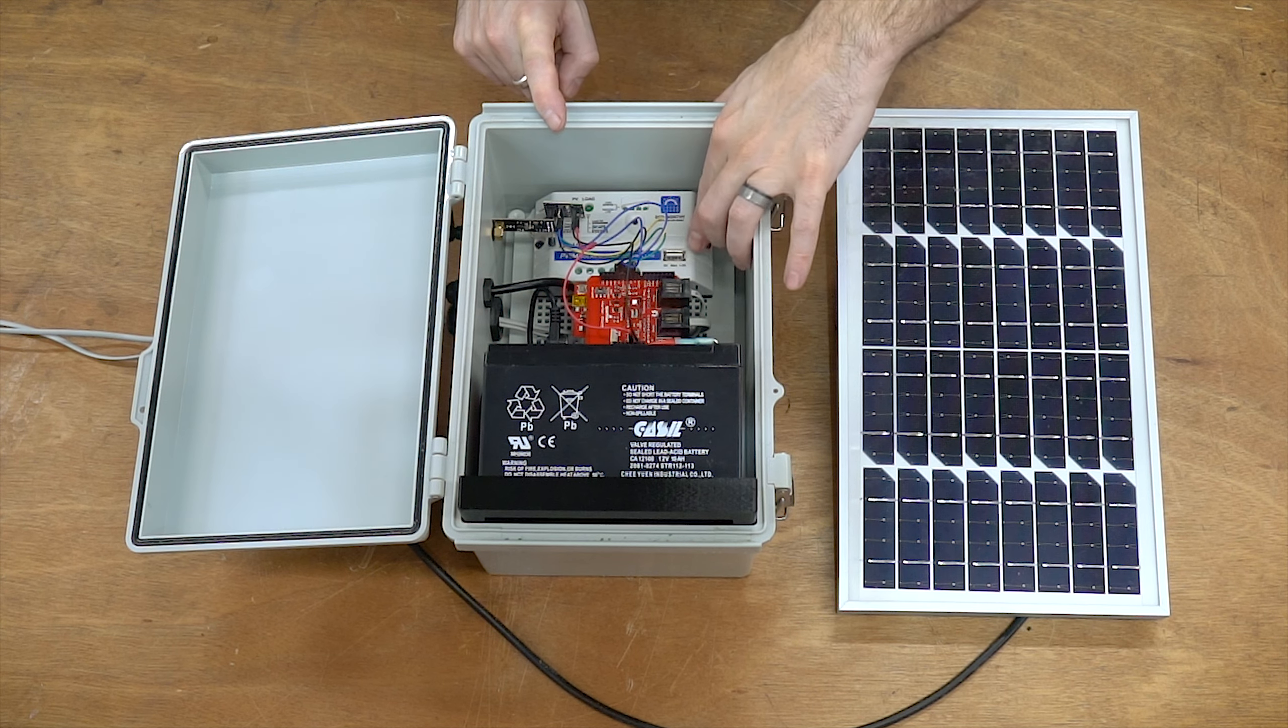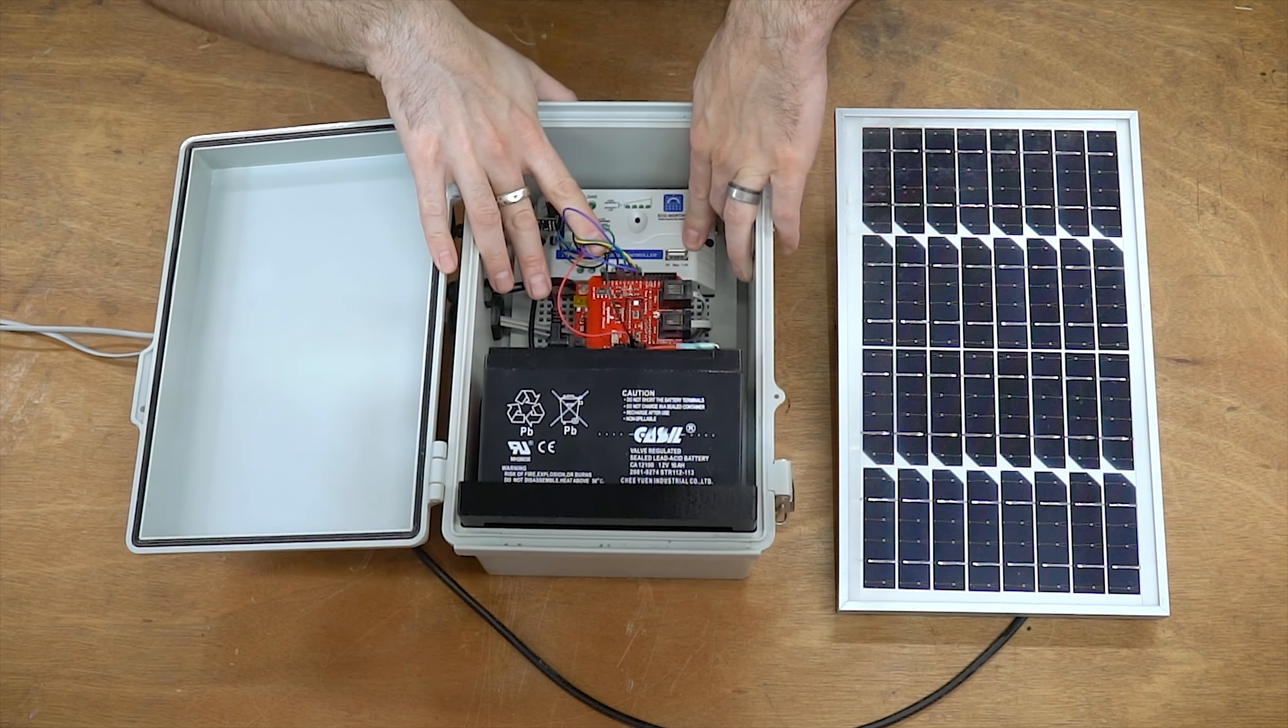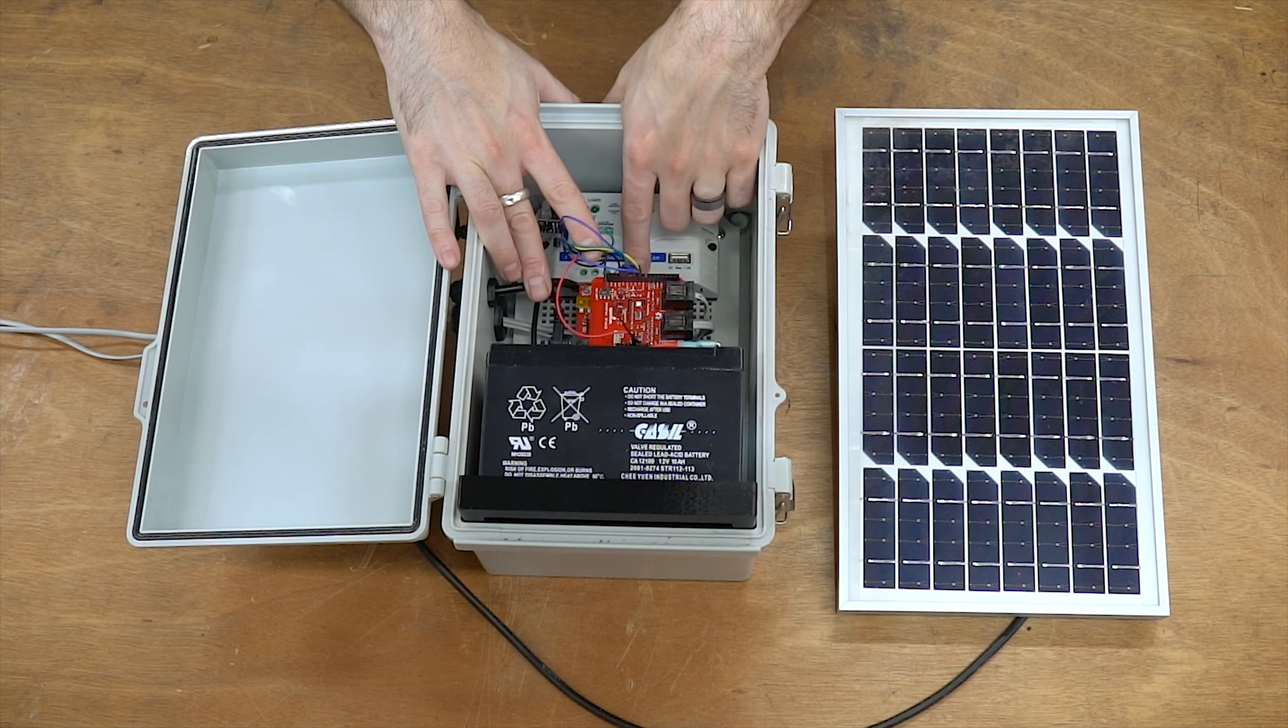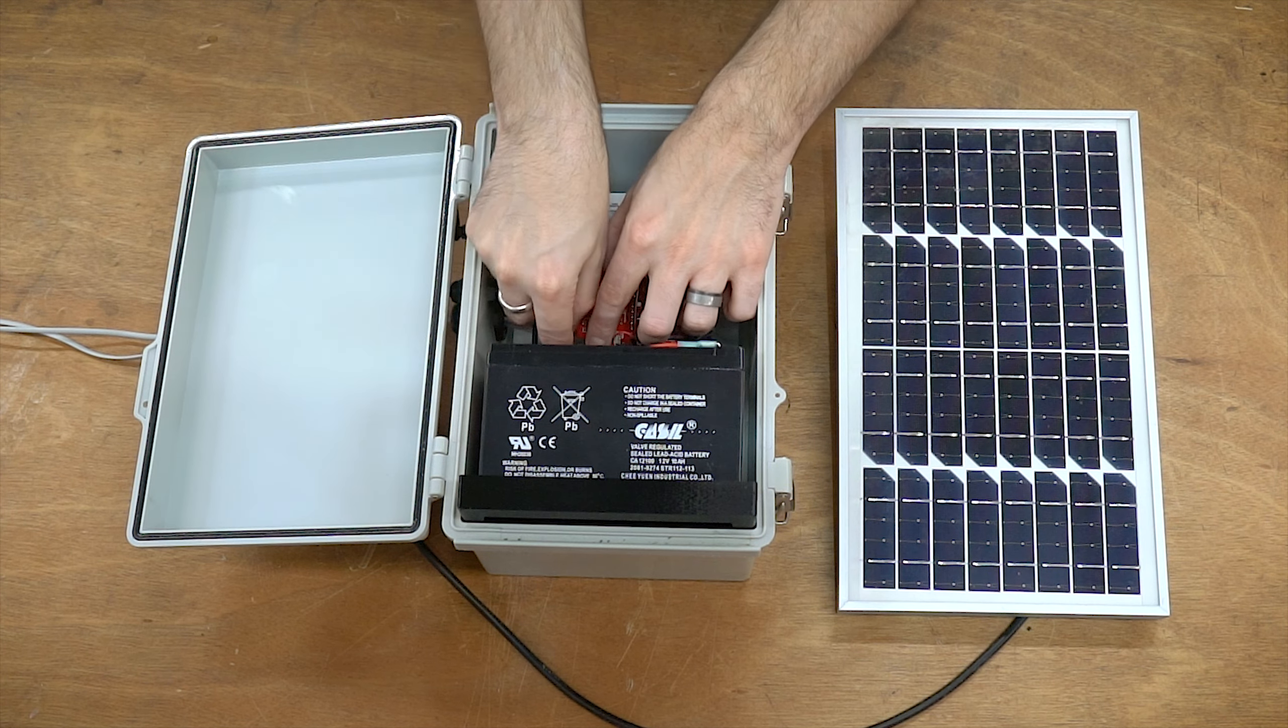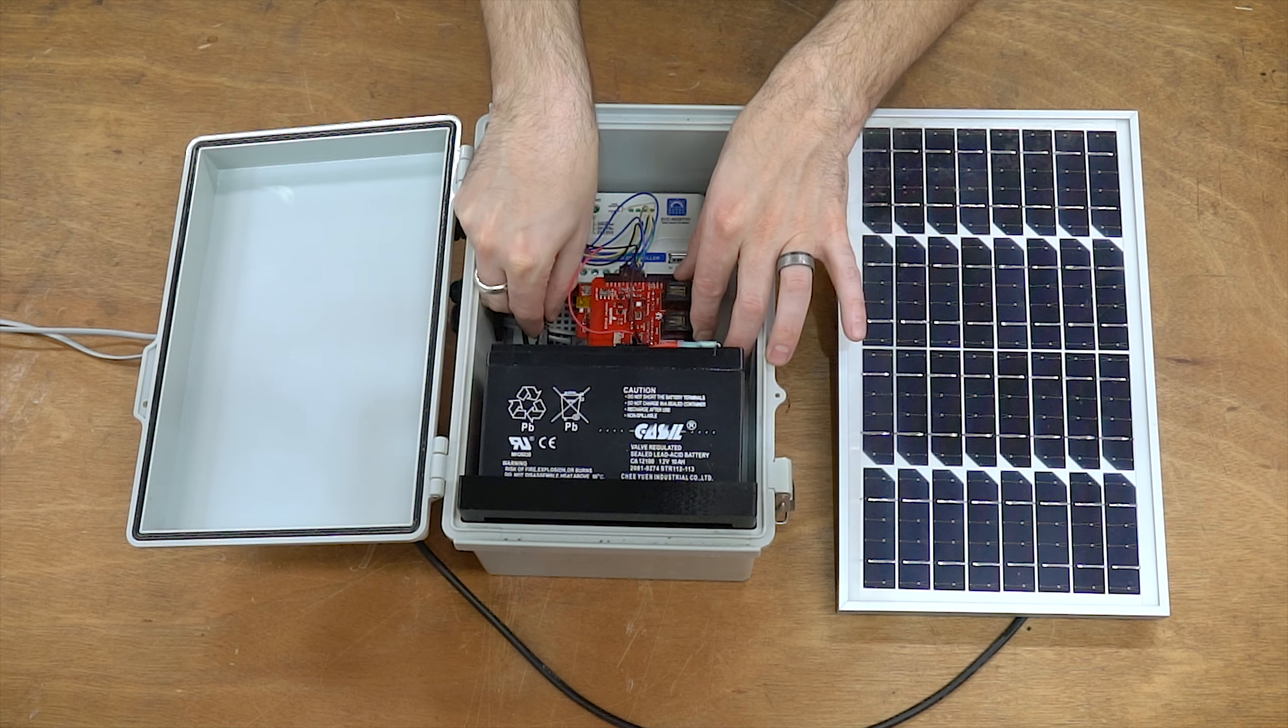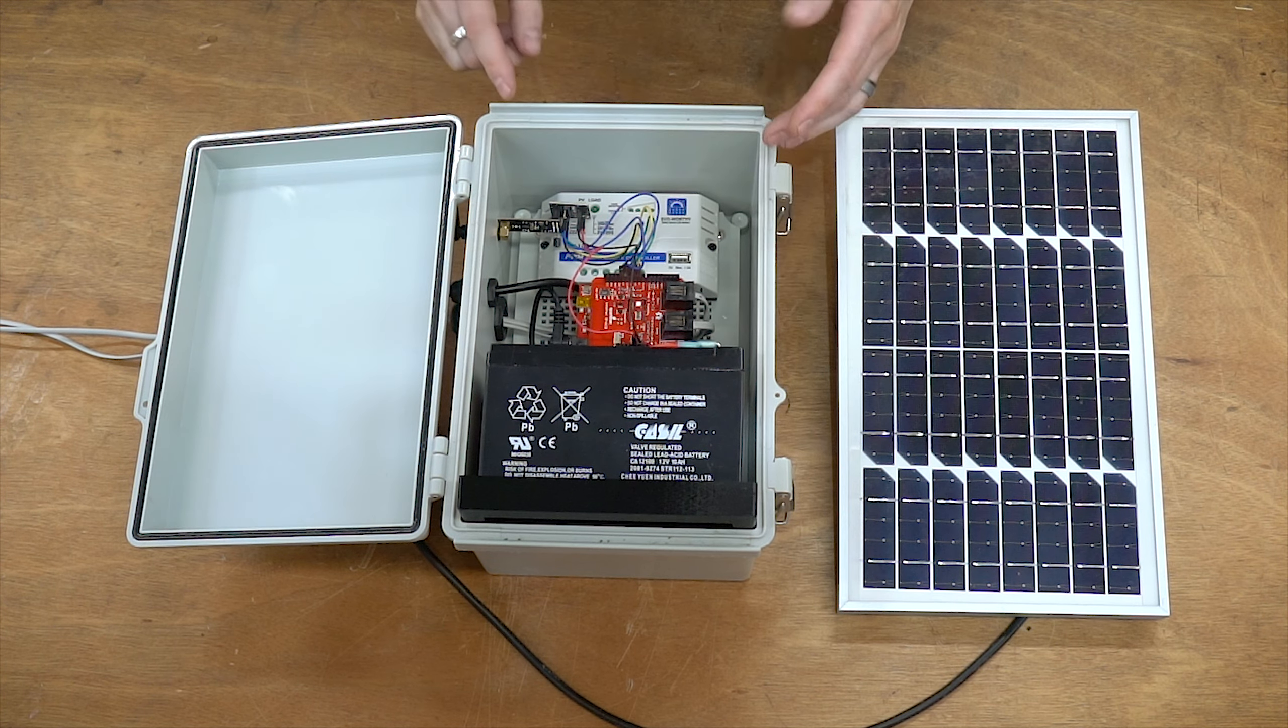And then there's an output, you actually have a five volt USB output. I don't know if you can see that, there you go, little five volt USB. And then you also have a 12 volt output on this that goes directly into this barrel jack that plugs into the Arduino in the middle. So that's kind of all there is to it.